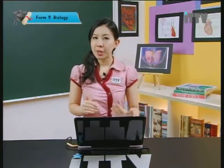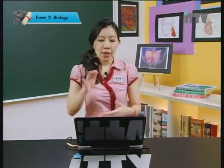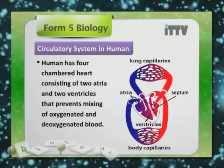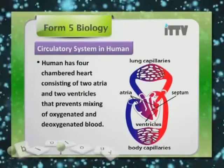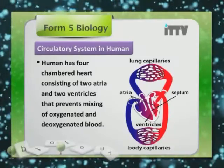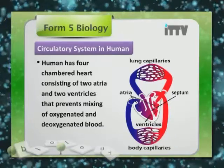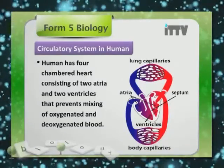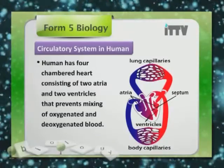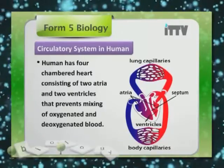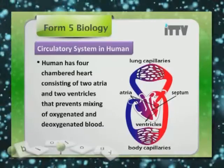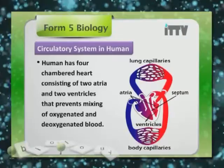Now let's look at the circulatory system in humans. Humans have a four-chambered heart consisting of two atria and two ventricles that prevent mixing of oxygenated and deoxygenated blood. The ventricles are divided by a septum that prevents the two types of blood from mixing, because the oxygen content would not be sufficient to supply the body cells' needs.